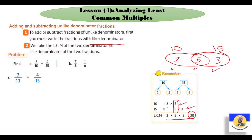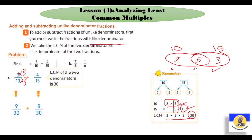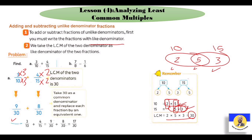دلوقتي الـ denominator اللي هستخدمه: هغير الـ ten خليها thirty، والـ fifteen خليها thirty. الـ ten بقت thirty: عملنا لها × 3، فزي ما عملنا في الـ denominator × 3، نعمل للـ numerator كمان × 3: يبقى 3 × 3 = nine over thirty. والـ fifteen بقت thirty: عملنا لها × 2، فنعمل للـ numerator × 2: يبقى 4 × 2 = eight over thirty. الـ denominator زي بعض دلوقتي: 9 + 8 = 17. فـ 3/10 + 4/15 = seventeen over thirty.